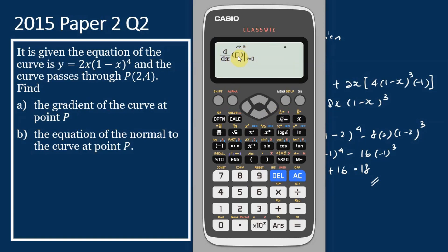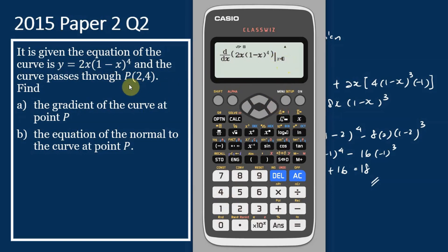This is the expression we would like to differentiate, and this is the x-value at which to find dy/dx. We enter the expression: 2x(1 - x)^4. We would like to find dy/dx when x = 2. Using the navigation key, we move the cursor to the x-value space and key in 2, then press equals. The answer is 18, which is the same as our calculated answer, confirming our answer is correct.